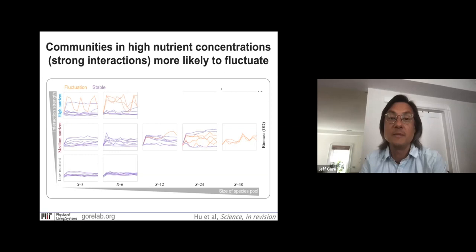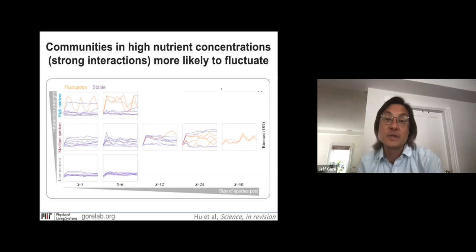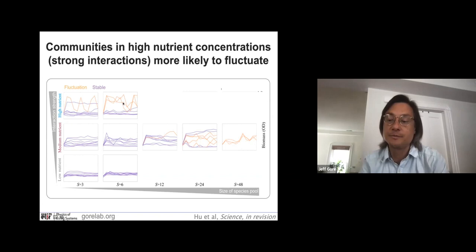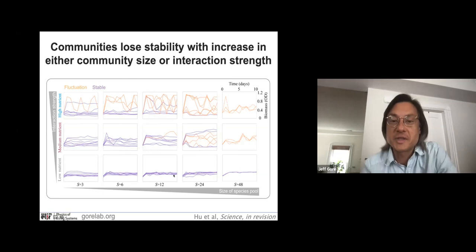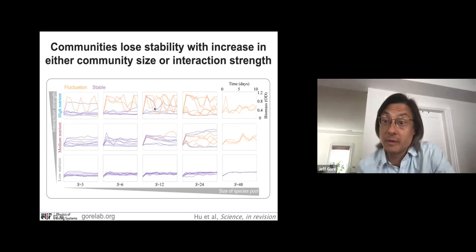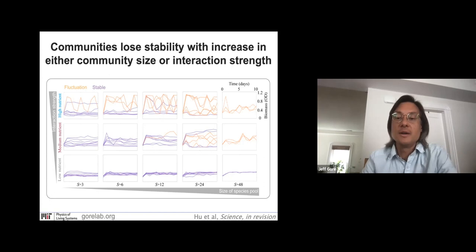I'll now show what this looks like as we vary the nutrient concentration. What I've been showing is the medium nutrient concentration, but we can go to lower and higher nutrients as well. For three-species communities at low nutrients, all communities are stable, but at high nutrients, one of those communities displays really huge fluctuations in biomass over time — possibly a limit cycle oscillation, which we're looking into. As we go to six-species communities, now we're seeing even more of those high-nutrient communities fluctuating in orange. For the 12-species communities: low nutrients — all stable; medium nutrients — maybe one fluctuating; high nutrients — a majority displaying fluctuations.